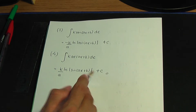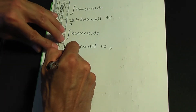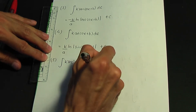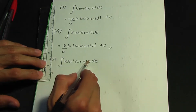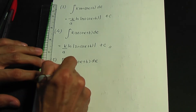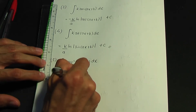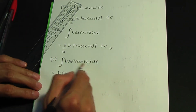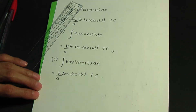Result number five: when we integrate k sec squared(ax + b) with respect to x — k, a and b are constants, angle is of the form ax + b — it's going to be k tan(ax + b) divided by the derivative of ax + b, which is a. So it's k over a, tan(ax + b), plus c.